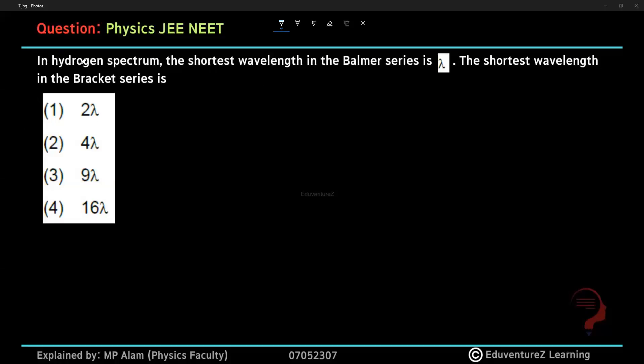So, students, we have a question here that in the hydrogen spectrum, the shortest wavelength in the Balmer series is λ. The shortest wavelength in the Bracket series is - you have to think that Balmer series, Bracket series, what does this mean?